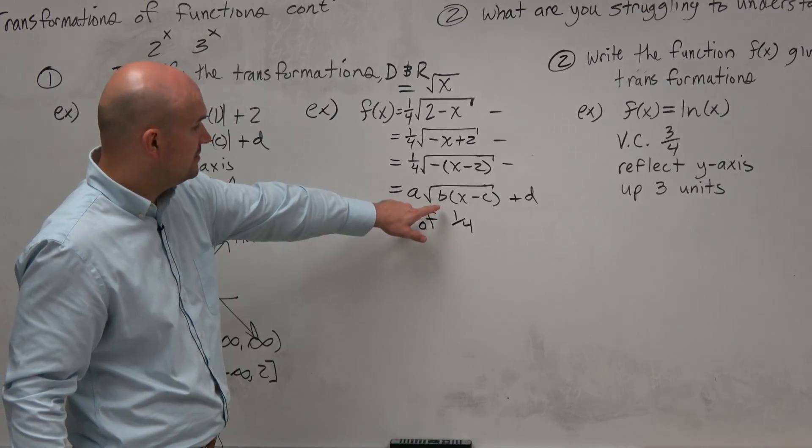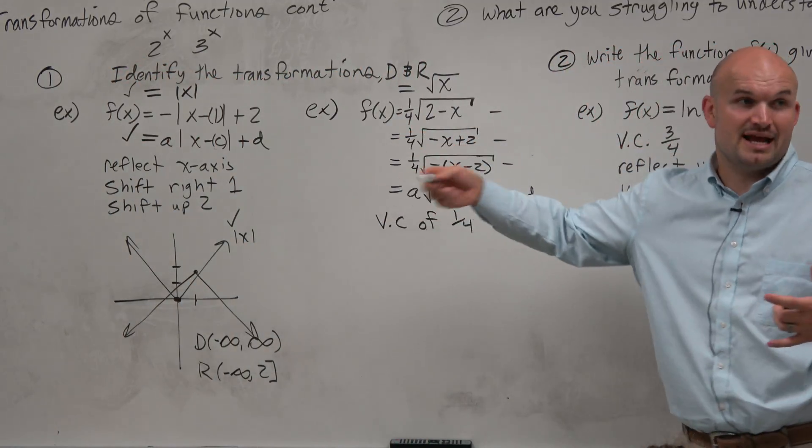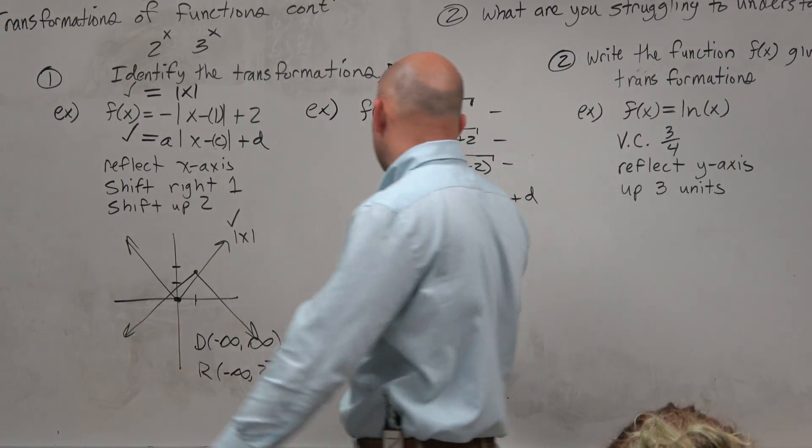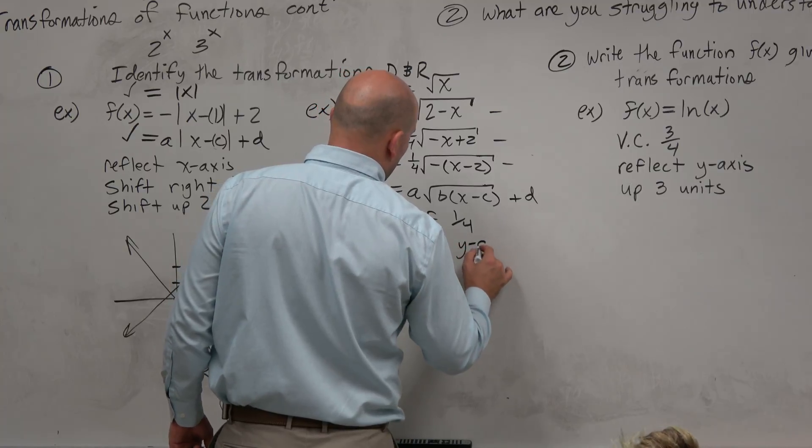I have a b here, but my b is negative. So when my a was negative, that would reflect the x-axis. So when b is negative, that's going to reflect the y-axis.